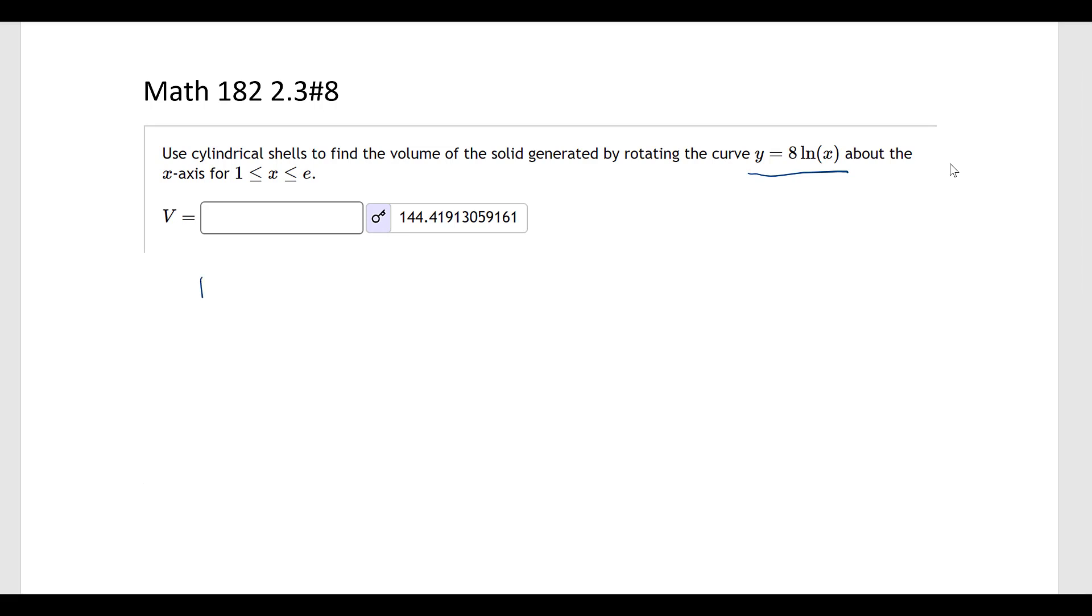So it helps to draw a picture just to see what's going on. This graph y equals 8 natural log of x looks something like this, where this crossing point is at 1, and over here we can call that e. So it's this region that's going around the x-axis.